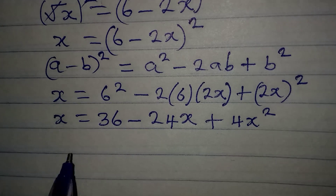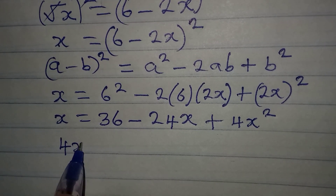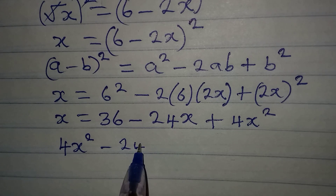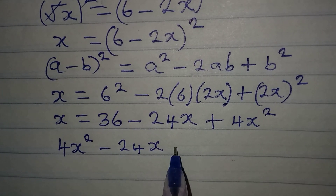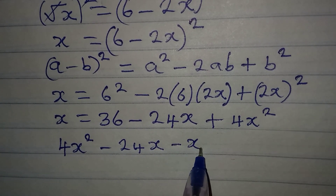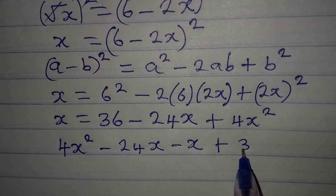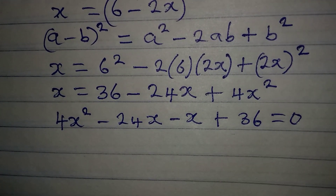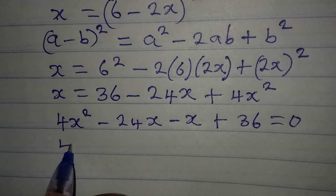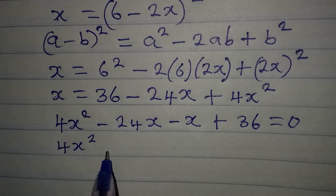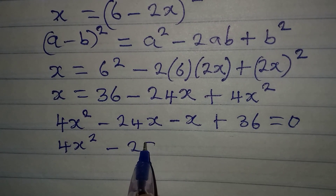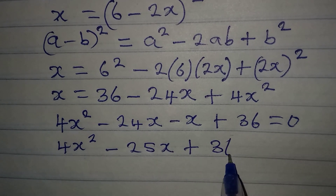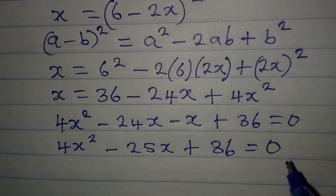Rearranging this, I write 4x squared first, then minus 24x, this x becomes negative, then plus 36, and this is equal to zero. So we have 4x squared minus 25x plus 36 equals zero.